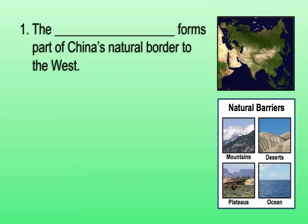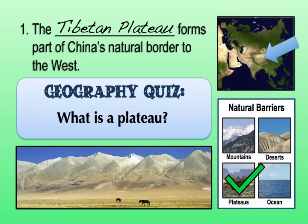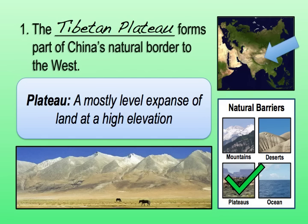China is surrounded by a series of imposing natural barriers that make it very difficult for people to come into or out of China. The first natural barrier I want to talk about is the Tibetan Plateau. Go ahead and write that down. In order to understand why the Tibetan Plateau is such an imposing barrier, we first need to make sure we understand exactly what a plateau is. A plateau is a mostly level expanse of land that is at a very high elevation.